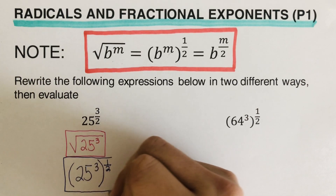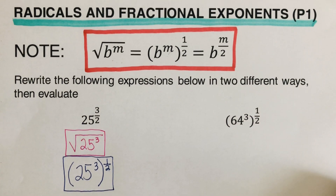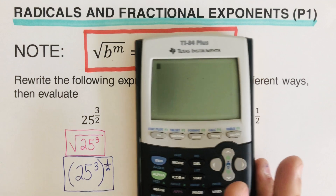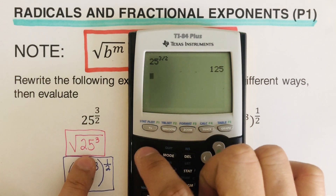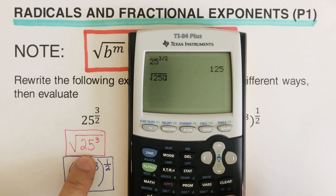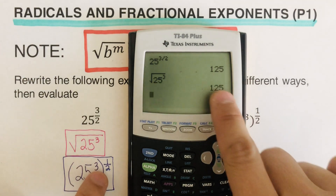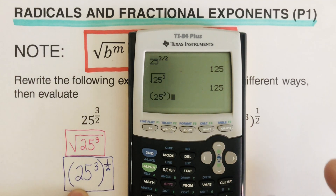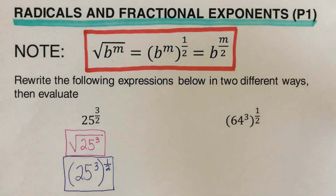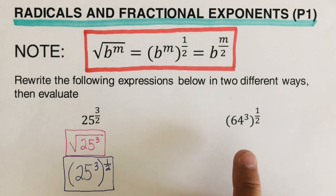Let's verify these three expressions are equivalent. Starting with 25 to the three-halves: 25 to the exponent three divided by two equals 125. The square root of 25 to the third power also equals 125. And 25 to the third power raised to the exponent one-half is also 125. All three expressions are equivalent. Pause the video and try this on your own!